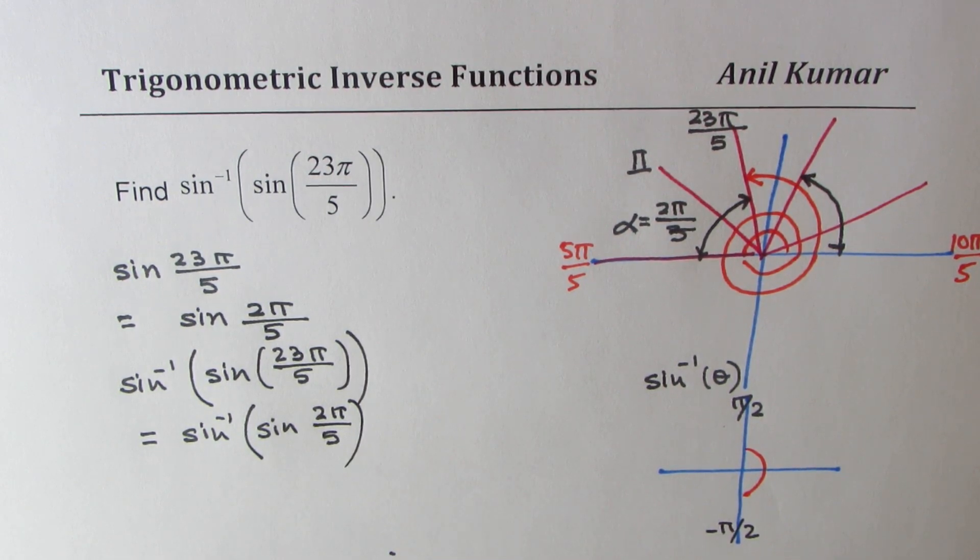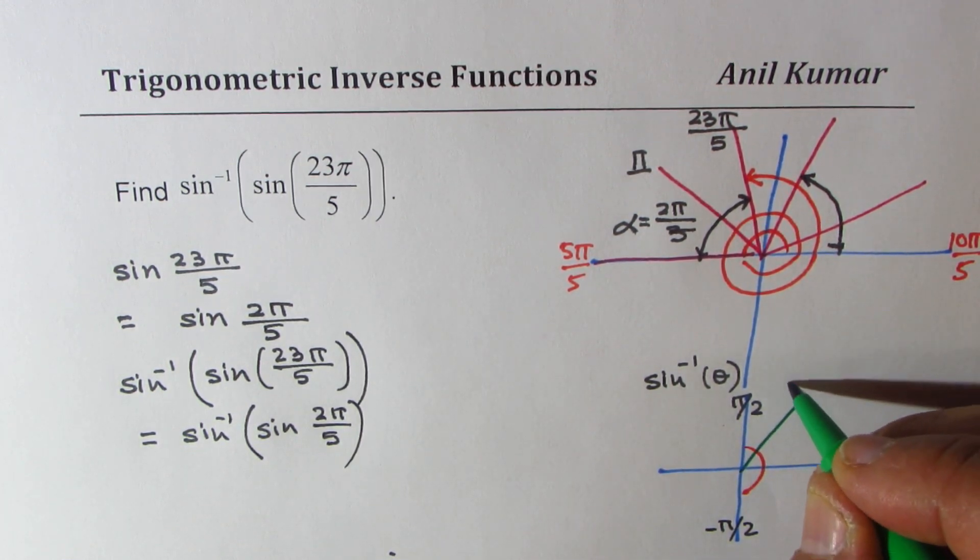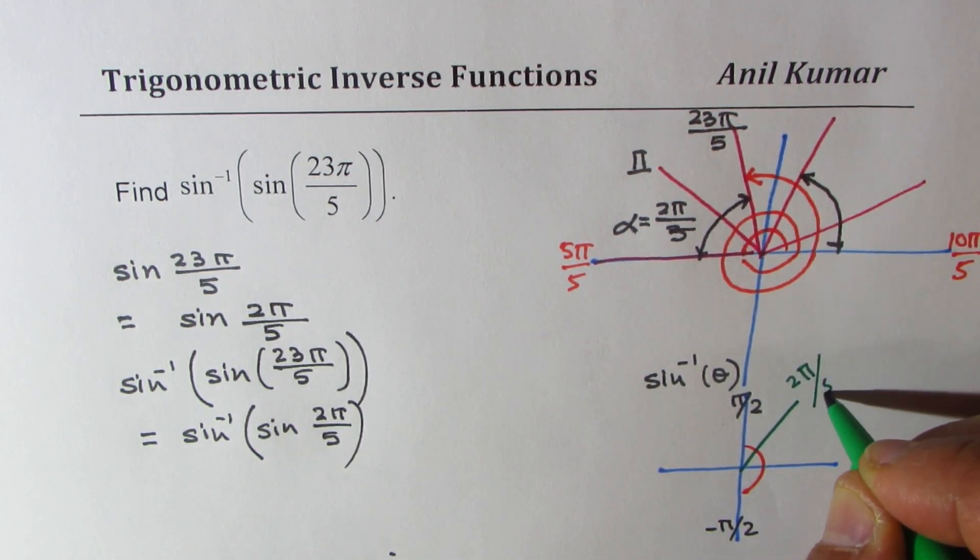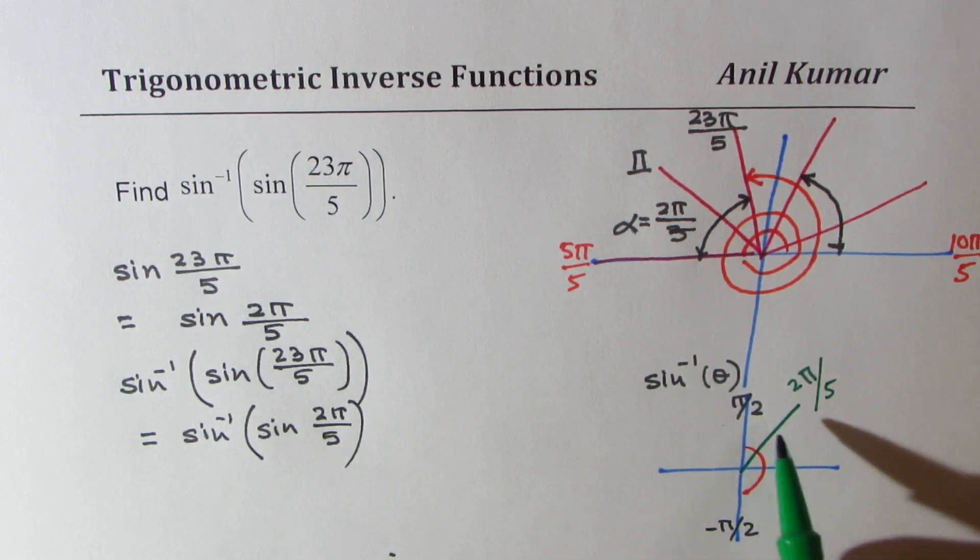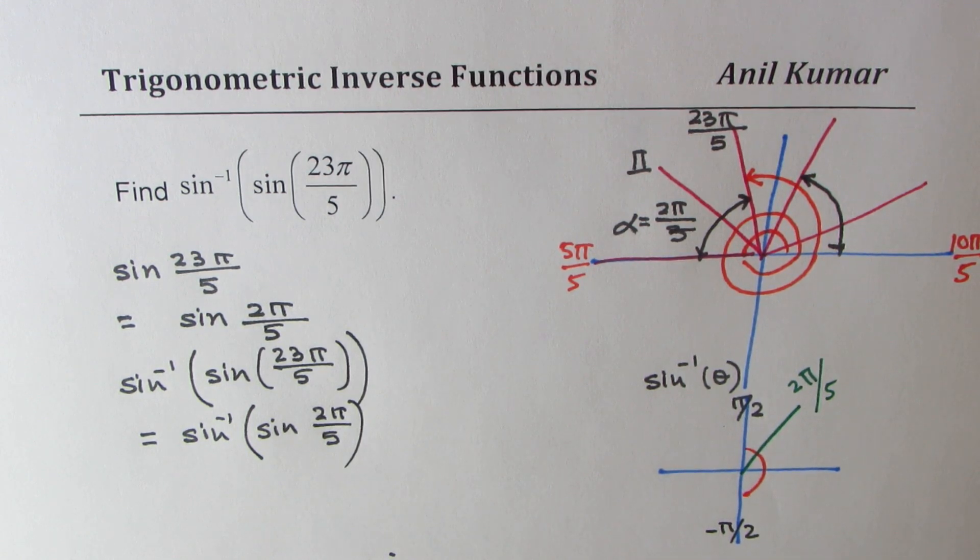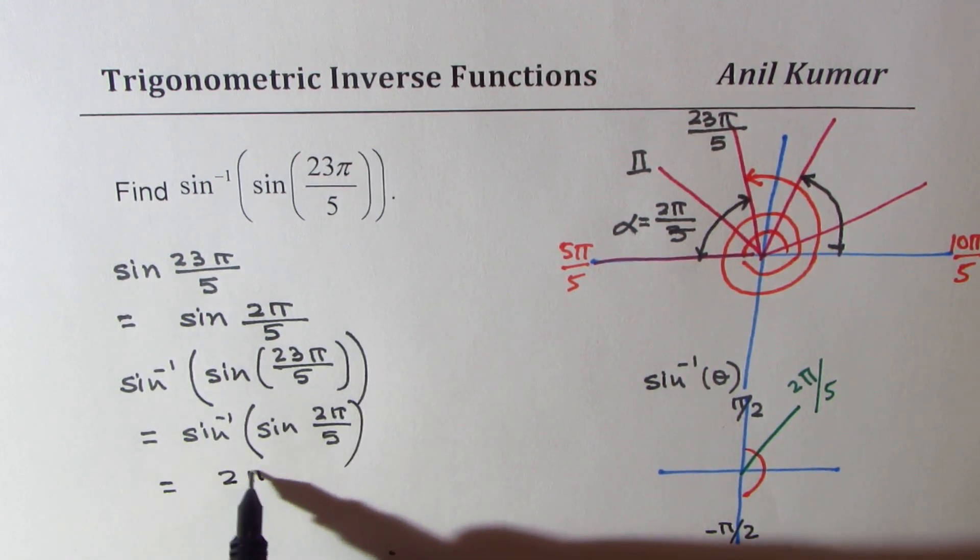Now, 2π by 5 is actually in quadrant 1. So that is 2π by 5. Now since sine inverse θ is valid between minus π by 2, π by 2, from here, we can write down this as equal to 2π by 5.